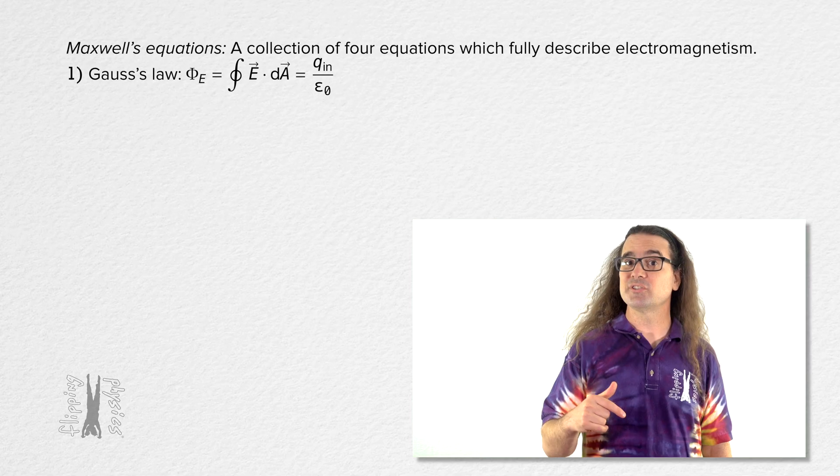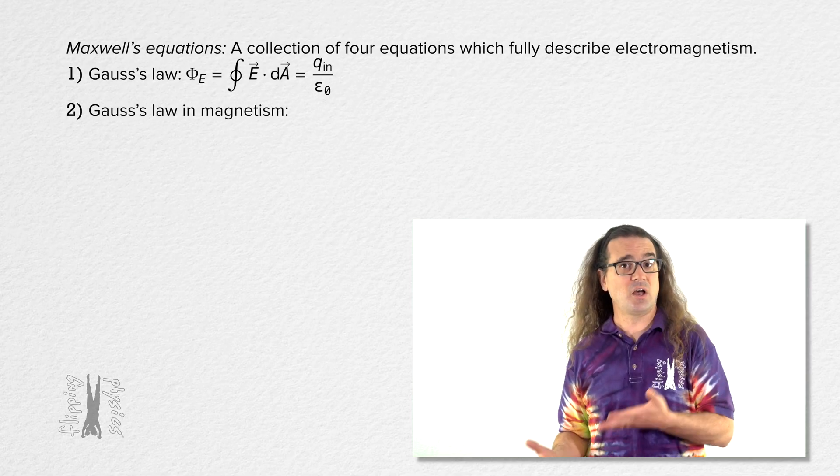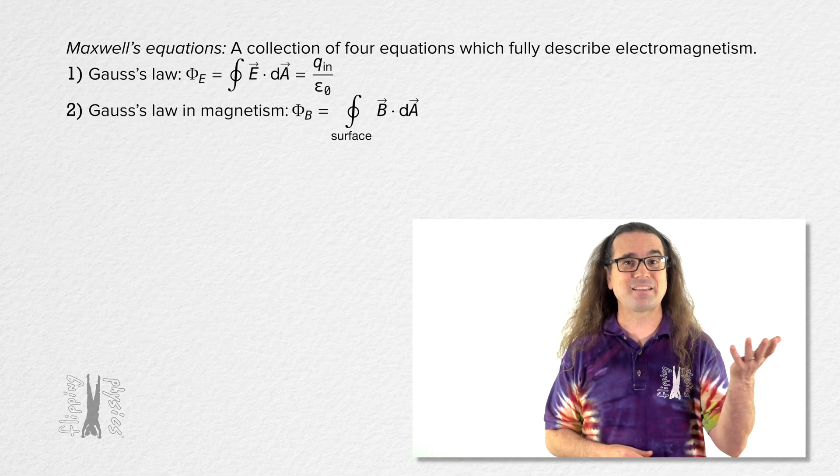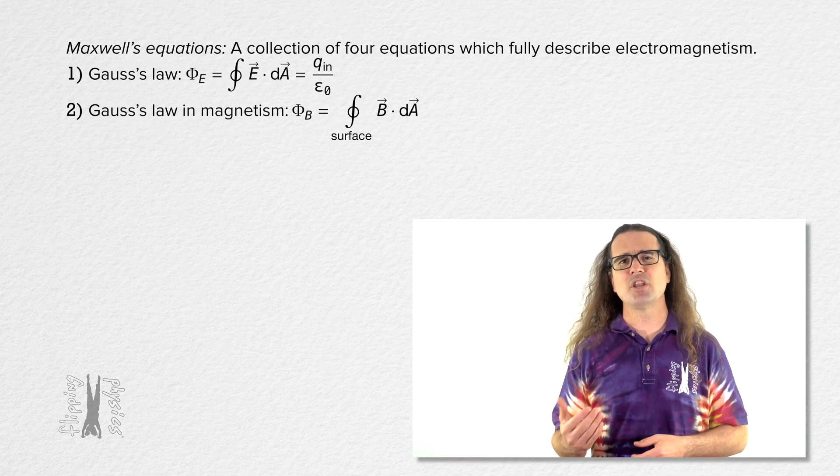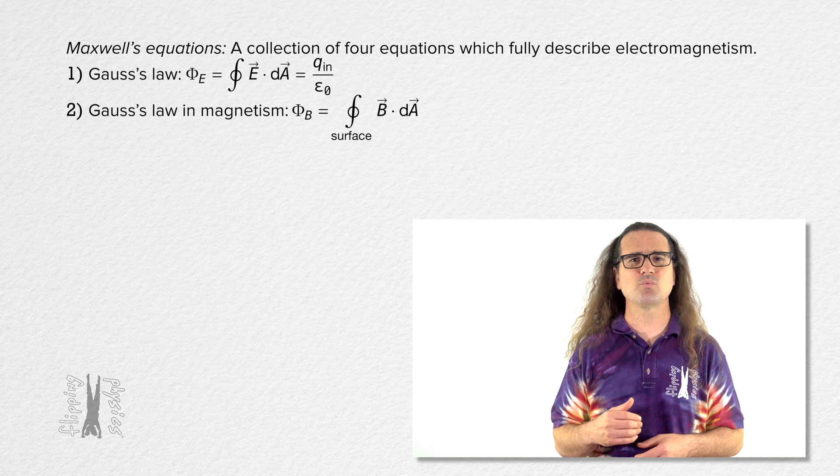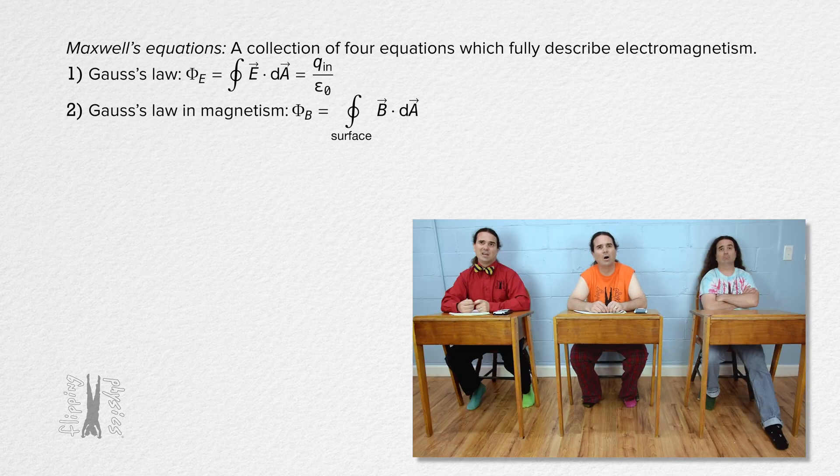The second of Maxwell's equations is Gauss's law in magnetism, which is very similar to Gauss's law only it deals with magnetic flux and magnetic field. And because all magnetic field lines are loops, the number of magnetic field lines which go into and out of a closed surface will be the same, meaning the magnetic flux through a closed surface will always equal zero.